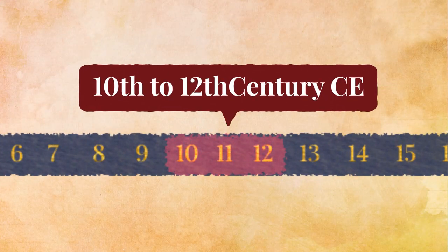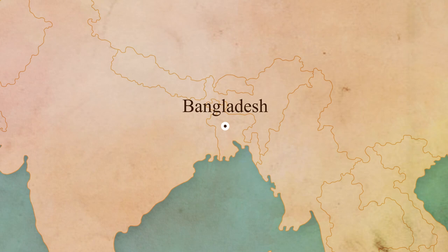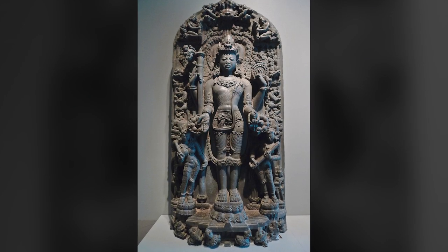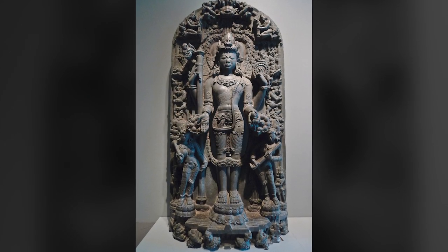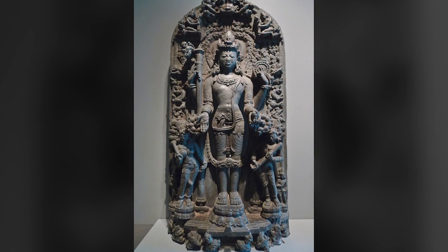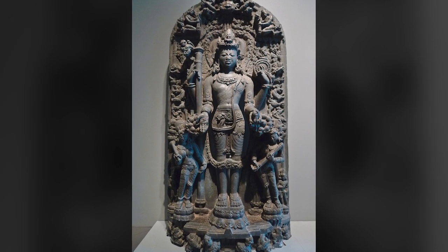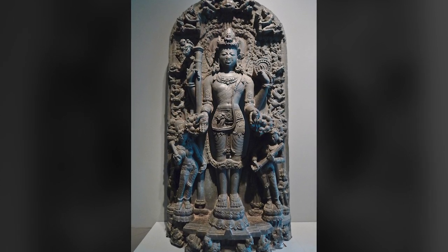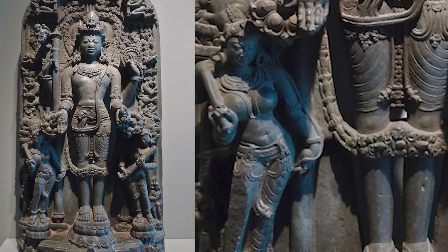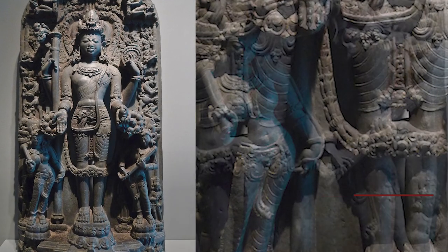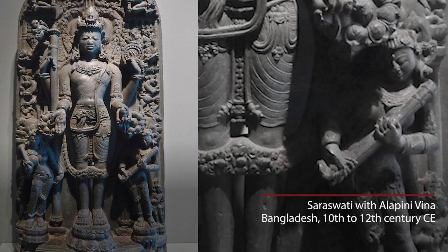About a thousand years ago, in Pala art in Eastern India, we find Vishnu with Lakshmi and Saraswati by his side. Vishnu represents a king, Lakshmi represents his treasury, and Saraswati the arts that he patronizes.